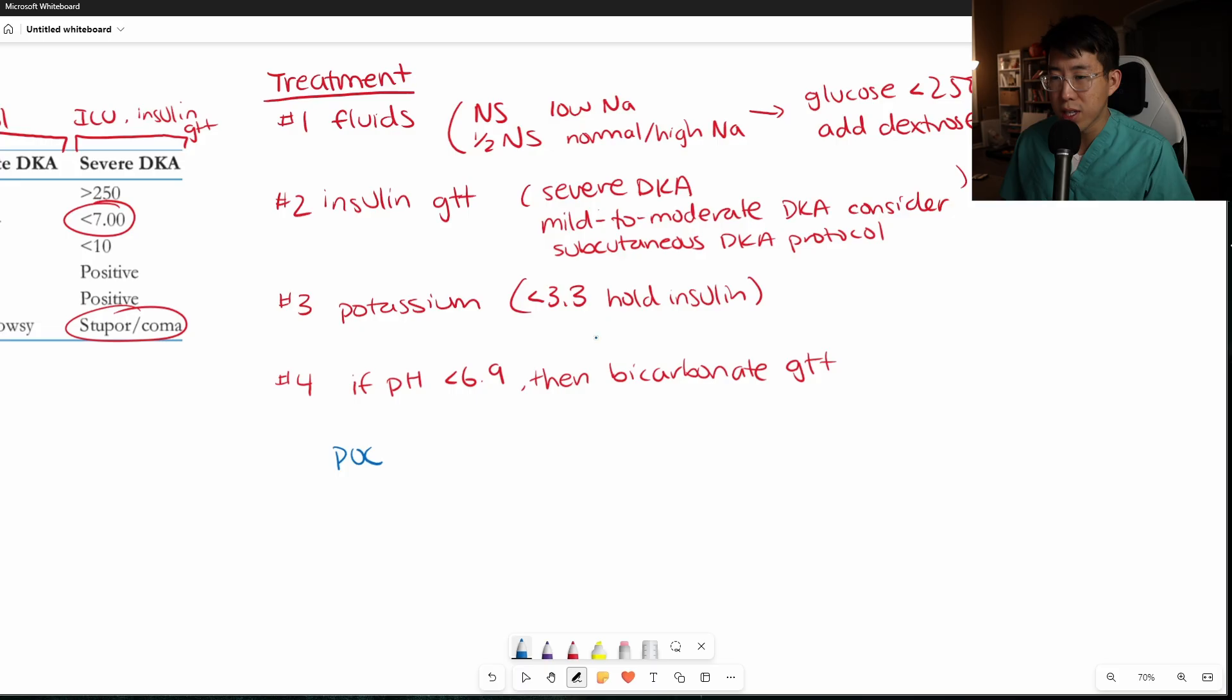While we're doing this treatment, we're generally checking the point of care glucose every one hour, especially on patients on an insulin drip. And we are checking the BMP about every four hours. And you want to continue the insulin drip or the subcutaneous DKA protocol until anion gap closes times two. So for example, let's say the patient's initial anion gap was 20. And then you continue repeating BMPs until you get one that's an anion gap of 12. Then you'll wait another four hours to get the next BMP to make sure that's also 12 or under. And at that point, you will say that the DKA has pretty much resolved and you can transition them into a subcutaneous insulin regimen.